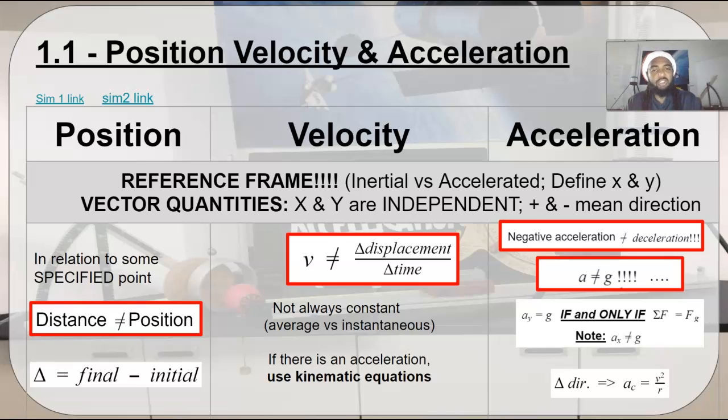Velocity is not displacement over time. That is only true if it is a constant velocity. That can also give you average velocity, but it will not give you the actual velocity that an object is moving at, which is called its instantaneous velocity, if an object is accelerating. If there is an acceleration, we have to use the kinematic equation. Again, if an object is accelerating, v is not equal to delta x over t. It's not true. V is going to be equal to some expression that you get from the kinematic equations in which you have to factor in acceleration.